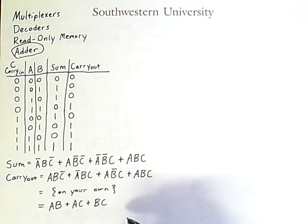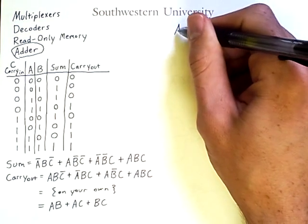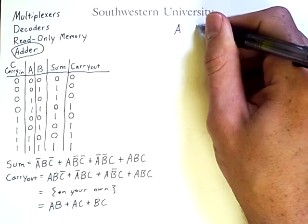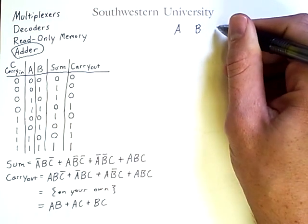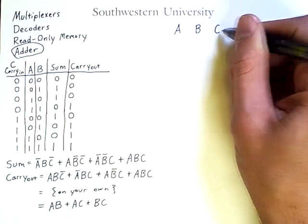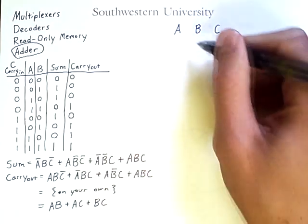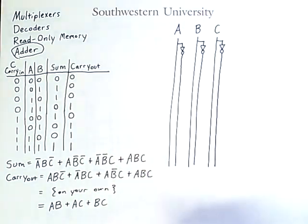So we've expressed how we want our adder to behave as a truth table and as Boolean expressions. Now we need to define a circuit that accomplishes the same input-output behavior. So let's put down our inputs. We have a, b, and then c is our carry in. And we need two outputs. A sum and a carry out.